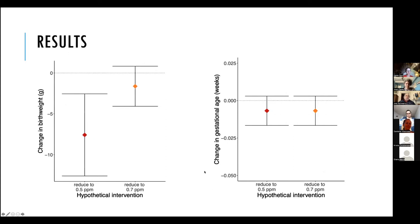We predicted the outcomes if fluoride levels exceeding 0.7 ppm were reduced to 0.7 ppm, and similarly for 0.5 ppm. To account for potential clustering within water systems, we used a clustered bootstrap for inference. For birth weight, we observed a small negative association corresponding to both interventions, with a larger association for the 0.5 ppm intervention — this is in the opposite direction of our hypothesis. The confidence intervals cross the null for the 0.7 ppm intervention but do not for the 0.5 intervention. For gestational age, both interventions showed small effects with confidence intervals crossing the null.